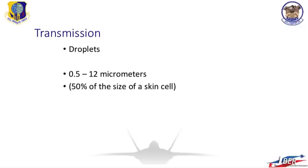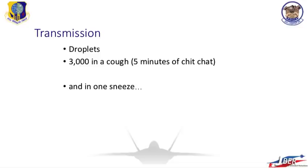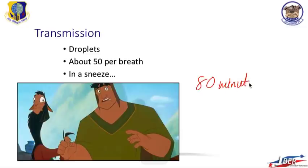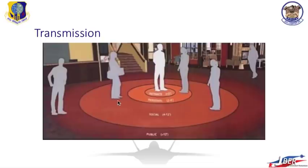COVID spreads primarily via respiratory droplets — and I don't mean droplets you can see with your eye. These are microscopic droplets that can remain suspended in the air for a little while after somebody talks, breathes, or coughs. The droplets are about half the size of a skin cell, which is much larger than a bacteria, but still big enough for thousands of viruses to fit inside. We expel these droplets when we talk, cough, or sneeze. In fact, coughing once is worth about five minutes of conversation, and in one sneeze the average person will expel about 40,000 respiratory droplets — which is enough for 80 minutes of conversation. Transmission seems to occur most readily within a range of six feet, because the droplets can remain suspended in the air long enough that folks inside that danger zone can inhale some of the droplets and acquire the infection.